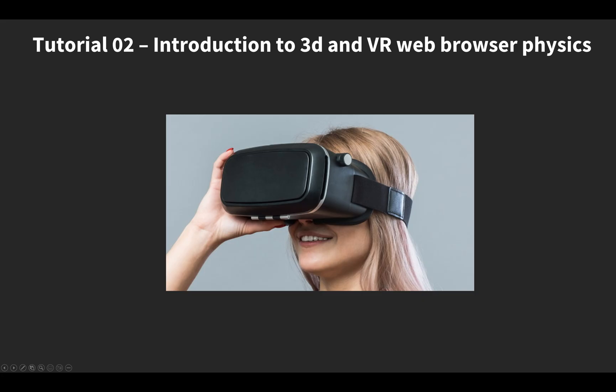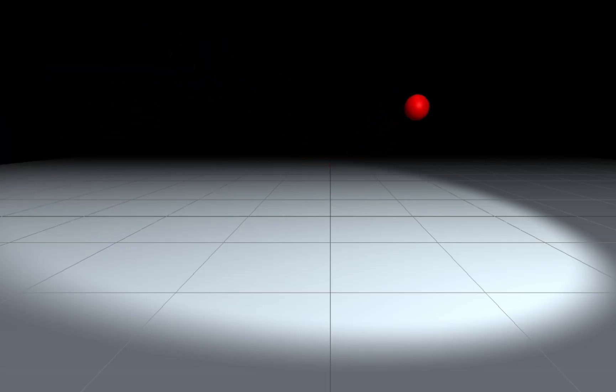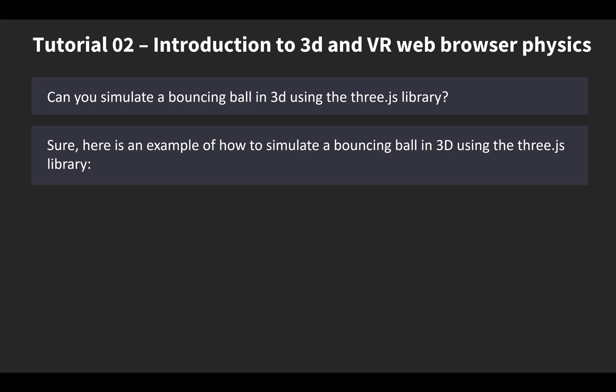In tutorial number two, I showed how to write 3D simulations in the browser using the library three.js. Here is my demo. Can ChatGPT do this as well? For this I asked it, can you simulate a bouncing ball in 3D using the library three.js? Sure. Here is an example of how to simulate a bouncing ball in 3D using the three.js library. Crazy. It could. First, I didn't see anything. I only had to add two commands to set the camera position and look at.